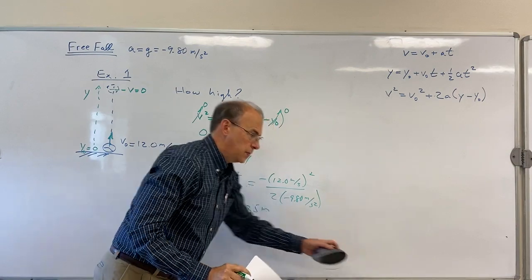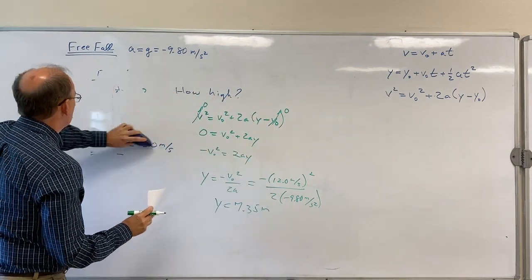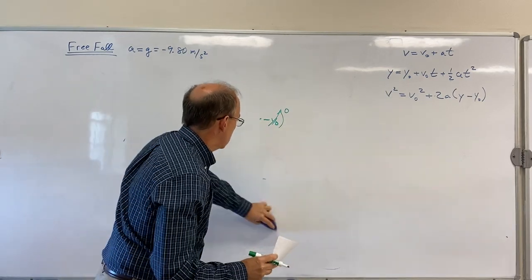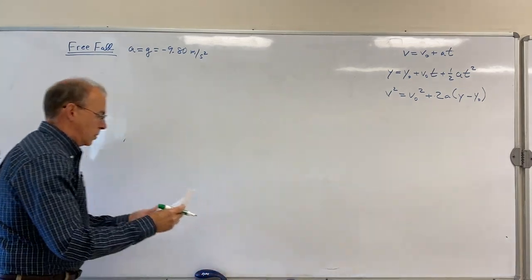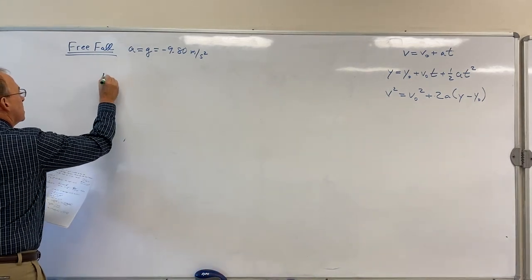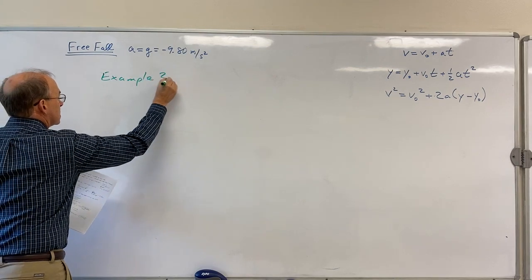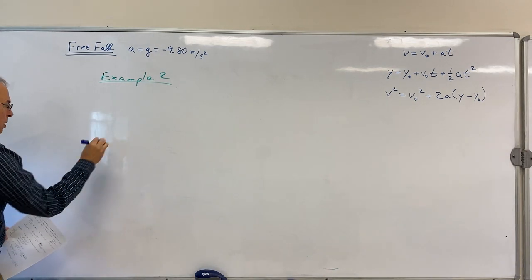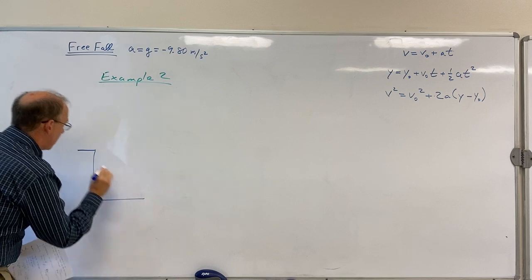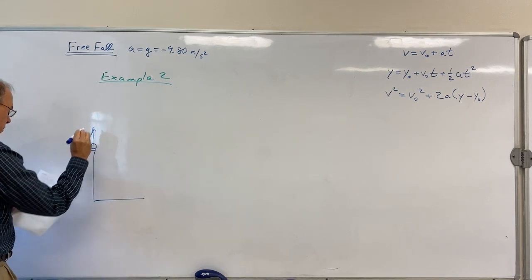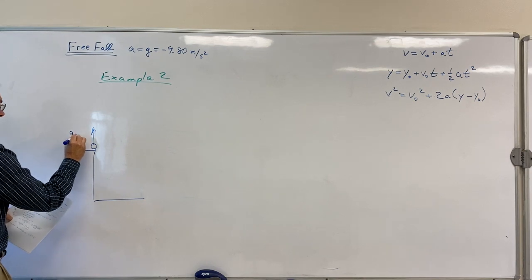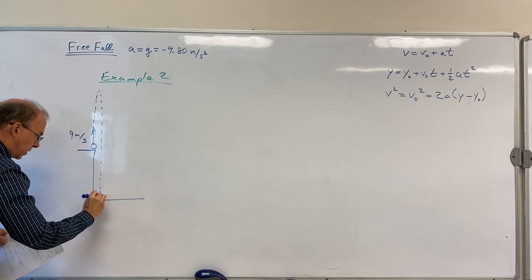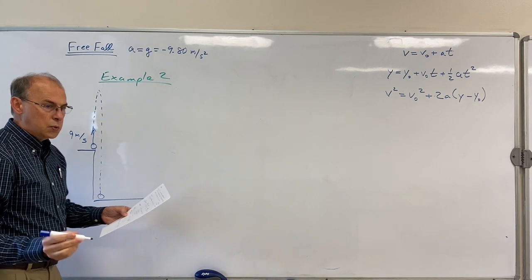All right, so there's our first example. Example 2. In this case I'm going to throw a ball up in the air just so it falls off a cliff. I'm going to start the ball here, throw it up at 9 meters per second, and it's going to go up and come back down and just miss the cliff and get down here. I'm going to ask two questions about it.